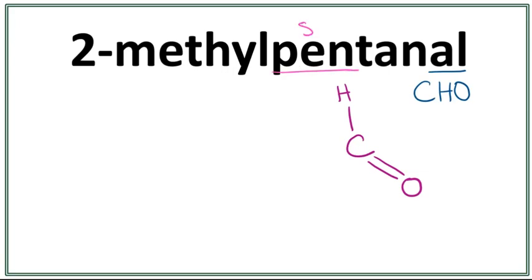This 'pent' here means that this has five carbons in the longest carbon chain. A trick to draw this is that you always count till one less than the number of carbons you want to draw. So one, two, three, four.